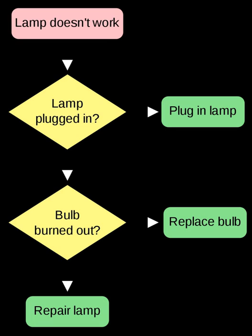Many operating system schedulers employ the concept of process priority. A high-priority process A will run before a low-priority process B. If the high-priority process blocks and never yields, the low-priority process B will, in some systems, never be scheduled — it will experience starvation.